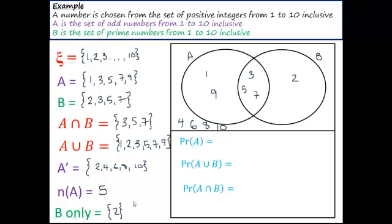Last thing we're going to do is calculate some probabilities. We need to remember we're thinking now about how many numbers are in each category. What's the probability of getting A? A was just the odd numbers. There were 5 odd numbers out of 10 total, because our universal set was the numbers 1 to 10. So the probability of getting A is a half.